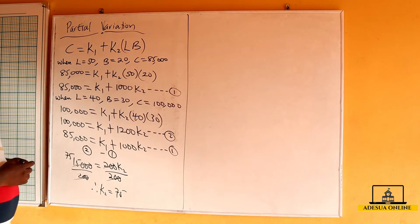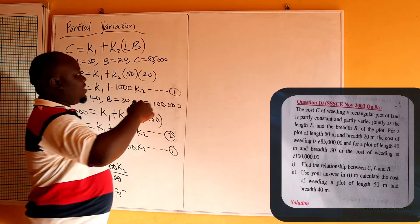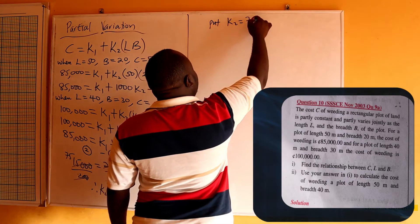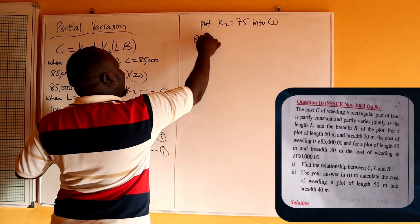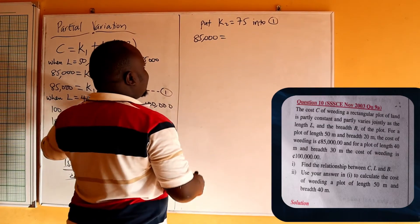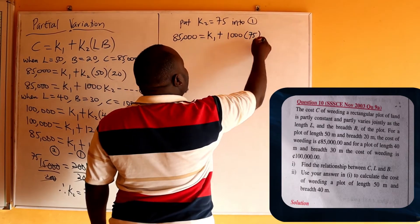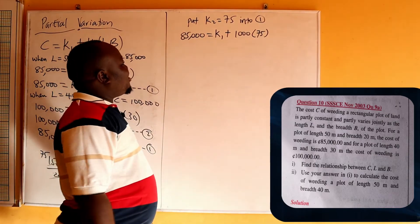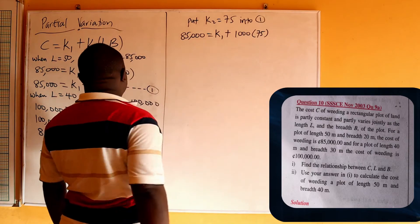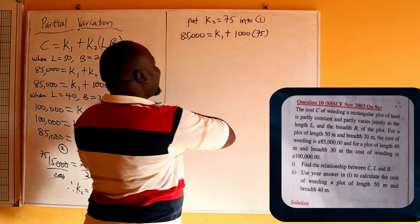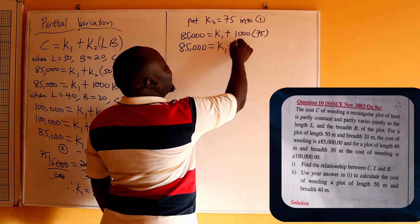To find K1, we substitute K2 = 75 into equation 1. So in equation 1 we have 85,000 = K1 + 1000·K2, where K2 is 75. This gives us 85,000 = K1 + 75 × 1000, which is 85,000 = K1 + 75,000.